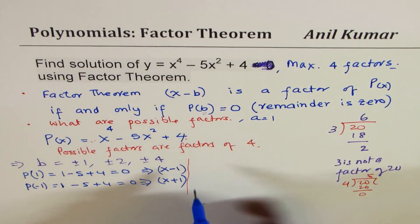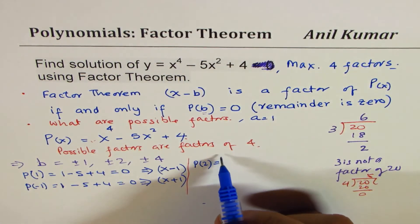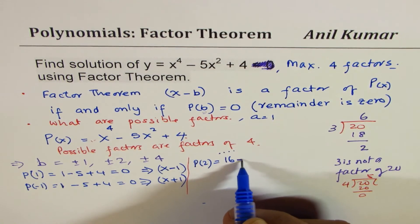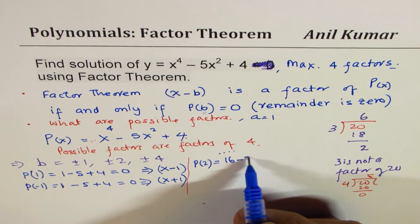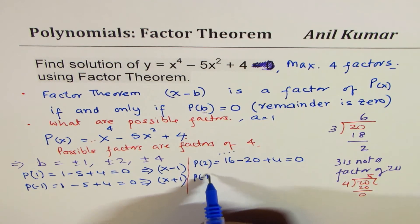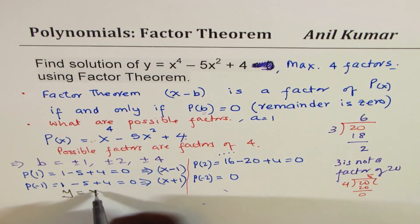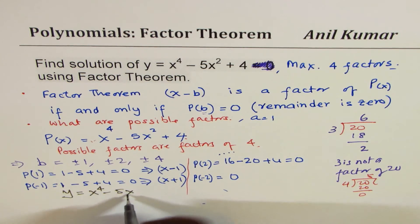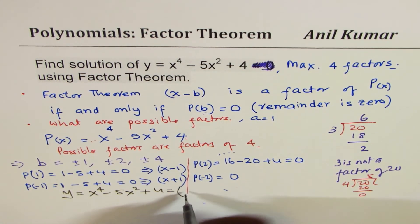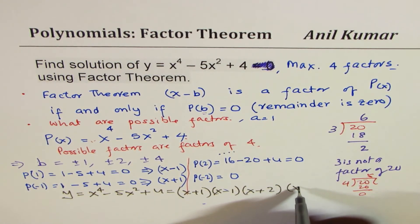Let's try 2. p(2) = 2 to the power of 4, which is 16, minus 5 times 4 which is 20, plus 4. That is also 0. And since this is an even function, p(-2) also equals 0. So we can write this function as y = x⁴ - 5x² + 4 = (x + 1)(x - 1)(x + 2)(x - 2).